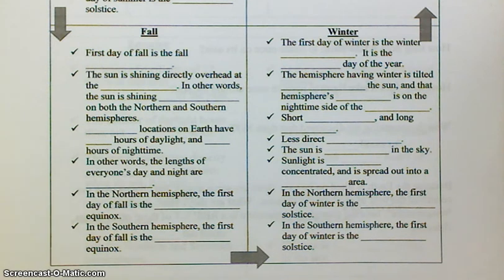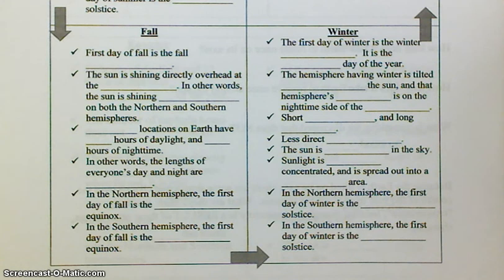We have less direct sunlight. The sun is lower in the sky. Sunlight is less concentrated and is spread out into a larger area. In the northern hemisphere, the first day of winter is the December solstice. In the southern hemisphere, the first day of winter is the June solstice.